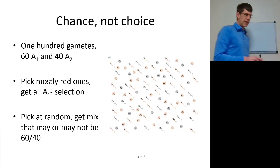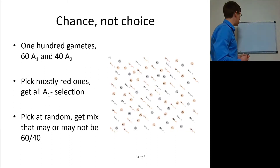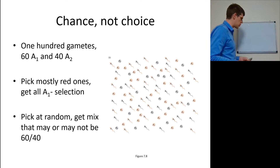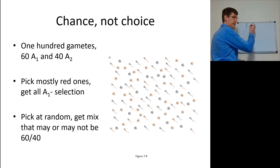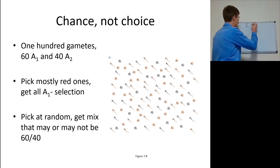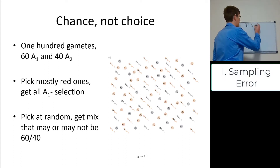This is an issue of sampling error — chance events, not choice. Choice is artificial selection, human choice, or nature's choice, natural selection. This is an issue of sampling error.